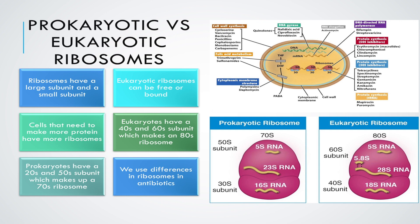Now let's get into how eukaryotes and prokaryotes differ in their ribosomes. Eukaryotes have a 40s subunit and a 60s subunit which eventually make up an 80s ribosome. The 's' represents the sedimentation coefficient, which is pretty much just a measure of how big the ribosome or the subunit is.